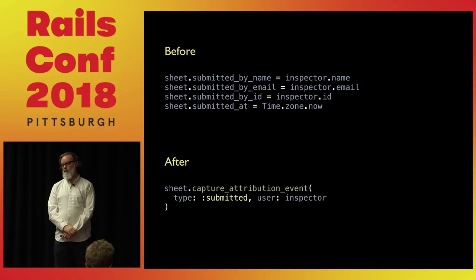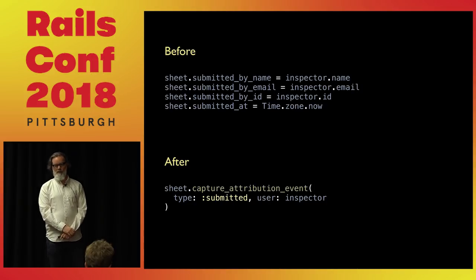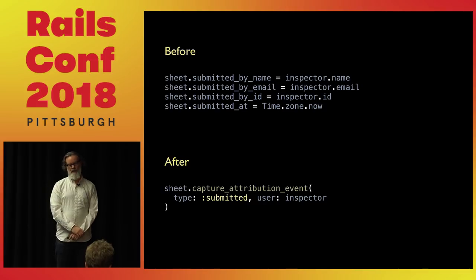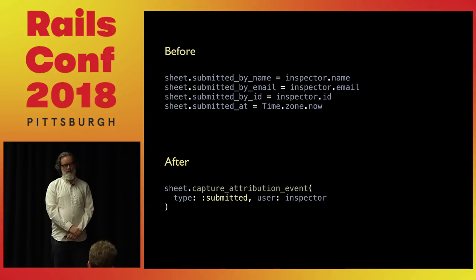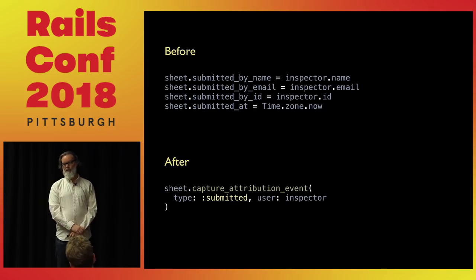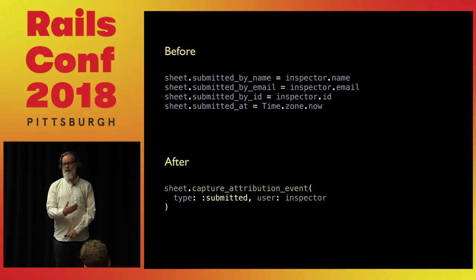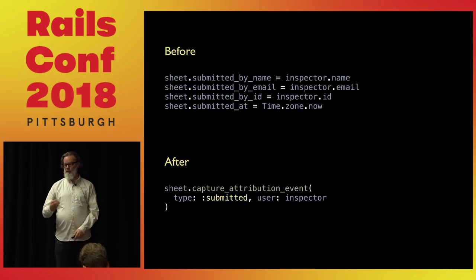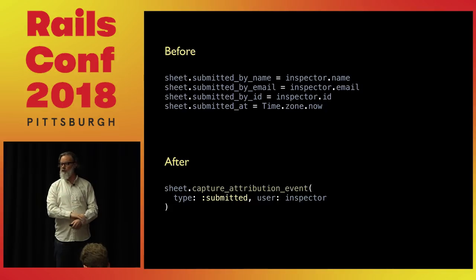Now I can do this: before I used to have to assign four separate attributes to capture an attribution event, whereas now I can just say 'capture the attribution event, it's a submitted one, and here's the user.' Under the covers exactly the same code is executing. It's interesting that we haven't actually changed the database schema at this point, so all the code that depends on the existing schema is working fine. We just have a more expressive way of sticking those values into the database and getting them out. The nice thing about the `composed_of` macro is that when I read a sheet out of the database I get references to these little attribution event objects.